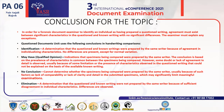No Conclusion — cannot determine whether the specimens were prepared by the same writer, usually because of factors such as lack of comparability, or lack of clarity and detail in the submitted specimens, which may significantly limit meaningful examination. Elimination — a determination that the questioned and known writings were not prepared by the same writer, because of sufficient disagreement in individual characteristics. Differences are observed.